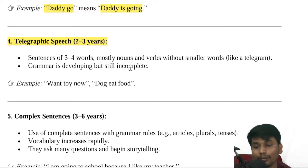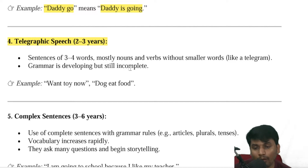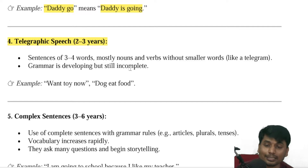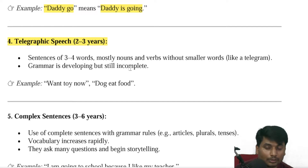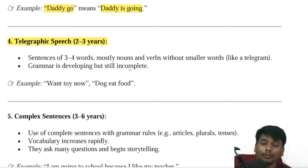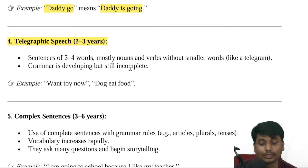Telegraphic speech: sentences of three or four words, mostly nouns and verbs, without smaller function words — like a telegram. Grammar is developed but still incomplete. For example: 'Want toy now' meaning 'I want toy now.' Or 'Dog eat food' — a grammar-related complete sentence.